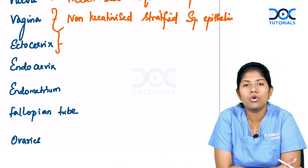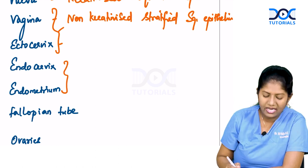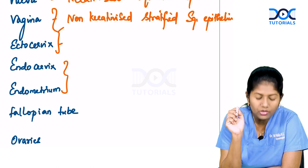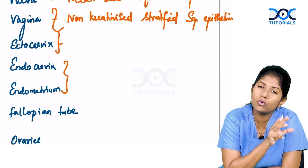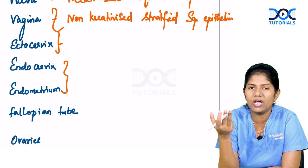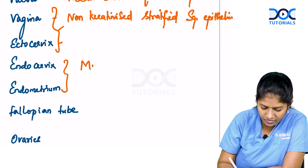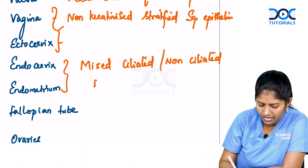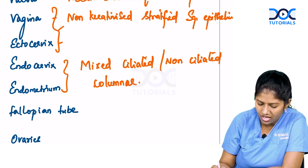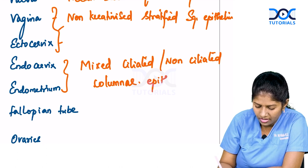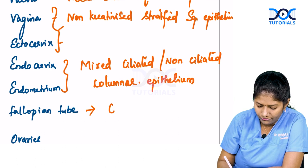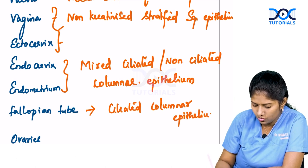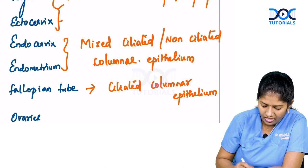Endocervix and endometrium are lined by columnar epithelium, but it is a little different from what you see in the fallopian tube. Endocervix and endometrium are lined by mixed ciliated and non-ciliated columnar epithelium, whereas in the fallopian tube you have ciliated columnar epithelium only.